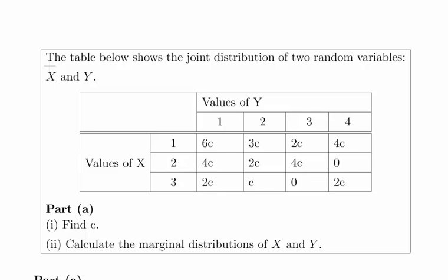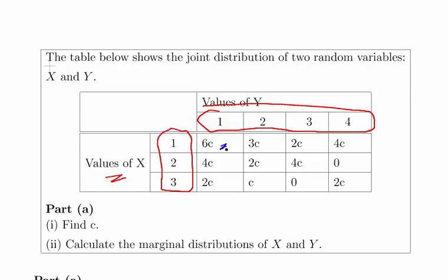In this presentation we are going to look at the joint distribution of two random variables x and y. Here we have the values of x: 1, 2, 3. Here we have the values of y: 1, 2, 3, 4. And here we have the probabilities of each of the joint occurrences. So for example the joint occurrence of x equal to 2 and y equal to 1 is 4c, and so on. You notice they're all denominated in terms of some value c. So essentially what we have to do is find the value of c and then find the marginal distributions of x and y.